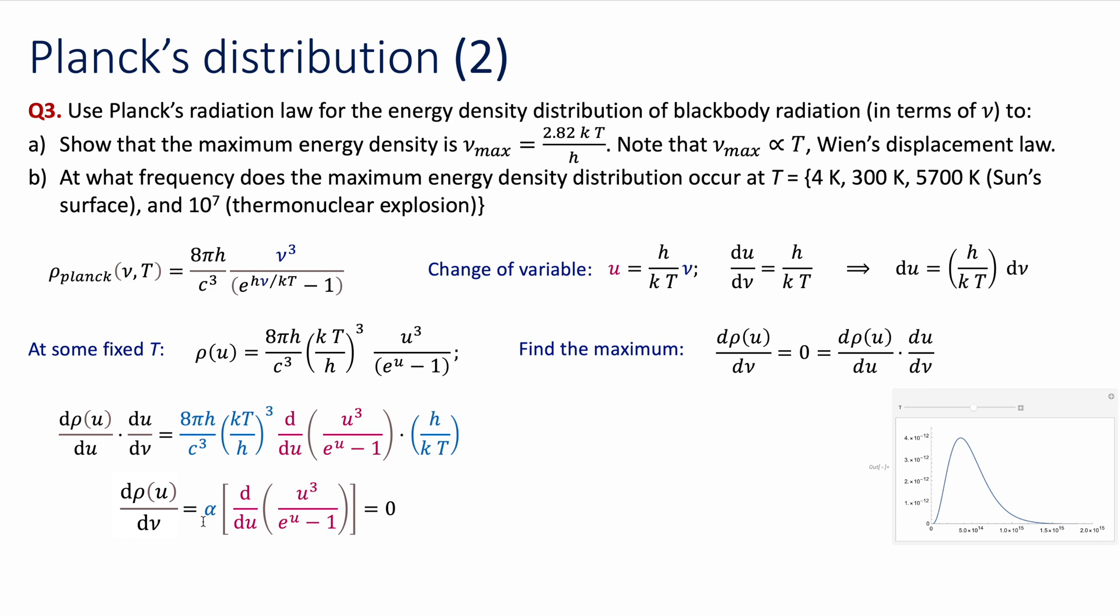Now I have a product of two terms equal zero. The possible solutions is that alpha is equal to zero, or that derivative of this function is equal to zero. If you think about it, alpha cannot be zero because it's a bunch of constants that I know all of them are positive. Even the temperature, because it's absolute temperature cannot be a negative number.